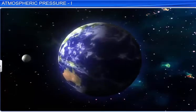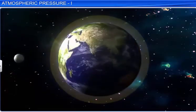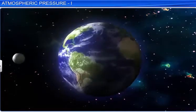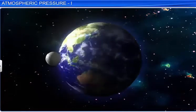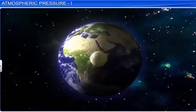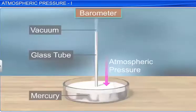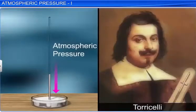The phenomenon of atmospheric pressure on the Earth is due to the presence of atmospheric air surrounding it. On the moon, however, there is no air, and hence no concept of atmospheric pressure. The Earth's atmospheric pressure at any given place can be measured using an instrument called the barometer, invented by Torricelli.